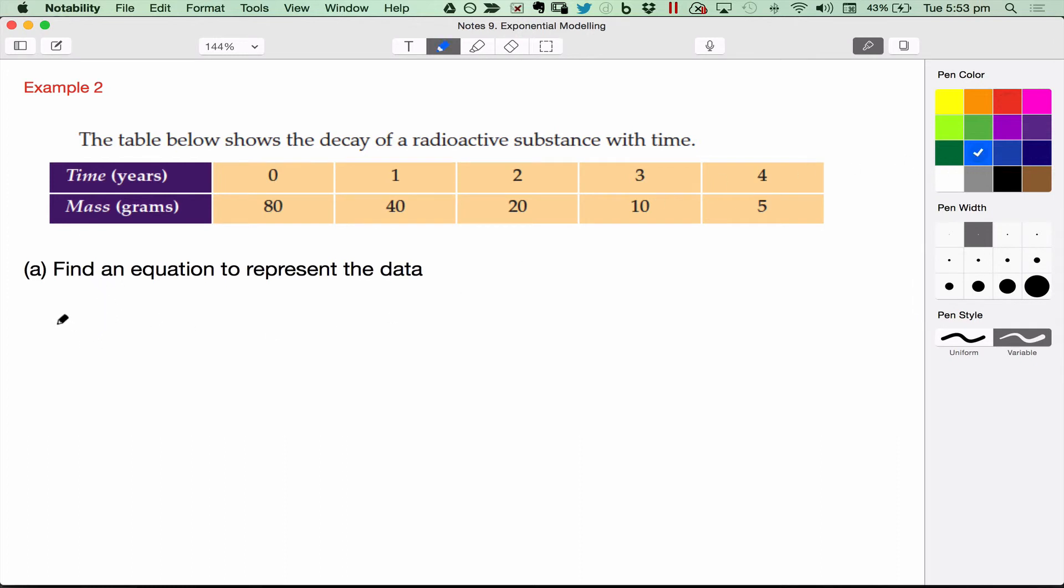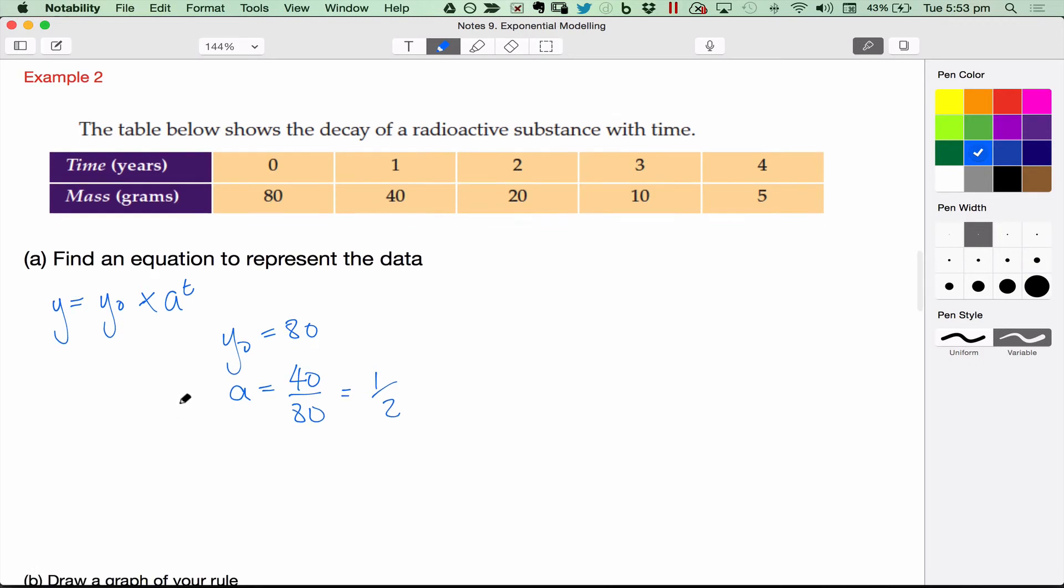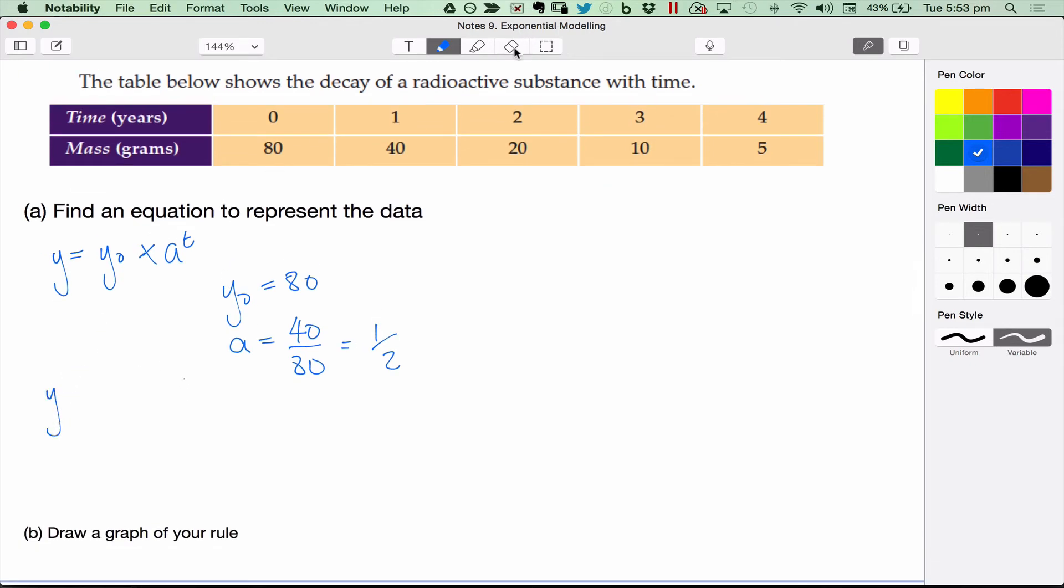First of all, we need to write out the equation that we're going to use. The initial value is 80. The decay factor is 40 divided by 80 equals a half. So we get for our equation, I keep writing y. Our equation is going to be m equals 80 times a half to the power t. Now you could equally write this as 2 to the negative t as I explained above. Either of these solutions is completely fine.